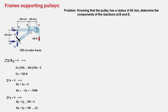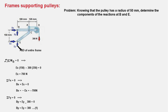BY and EY remain, and we shall find them by dismembering the frame. We can choose either of the two members. For this solution we'll choose member ECA, draw its FBD, and solve for the remaining two unknowns BY and EY.